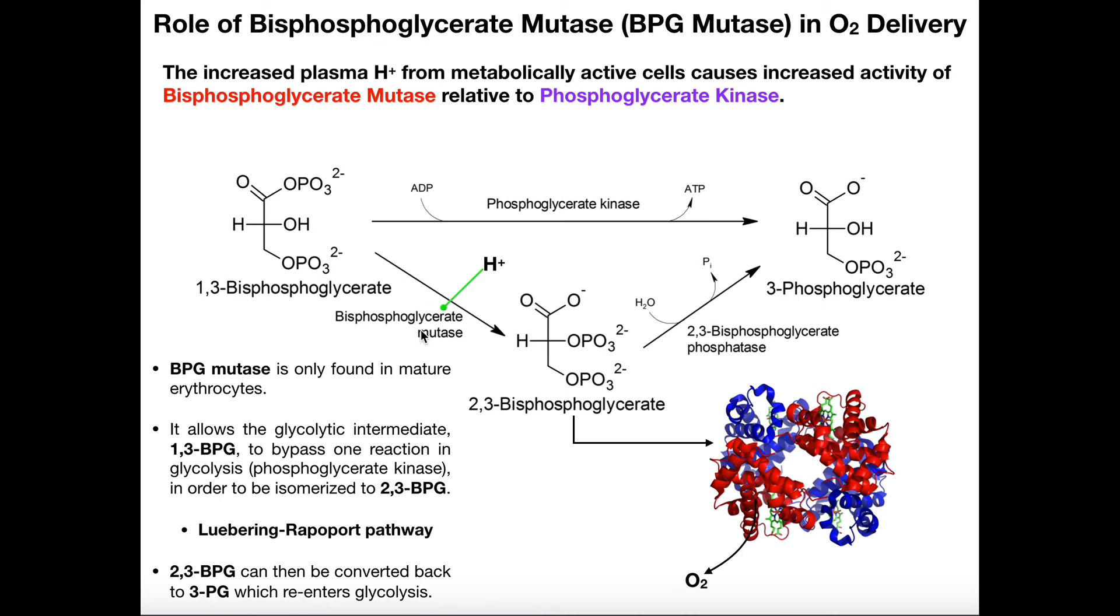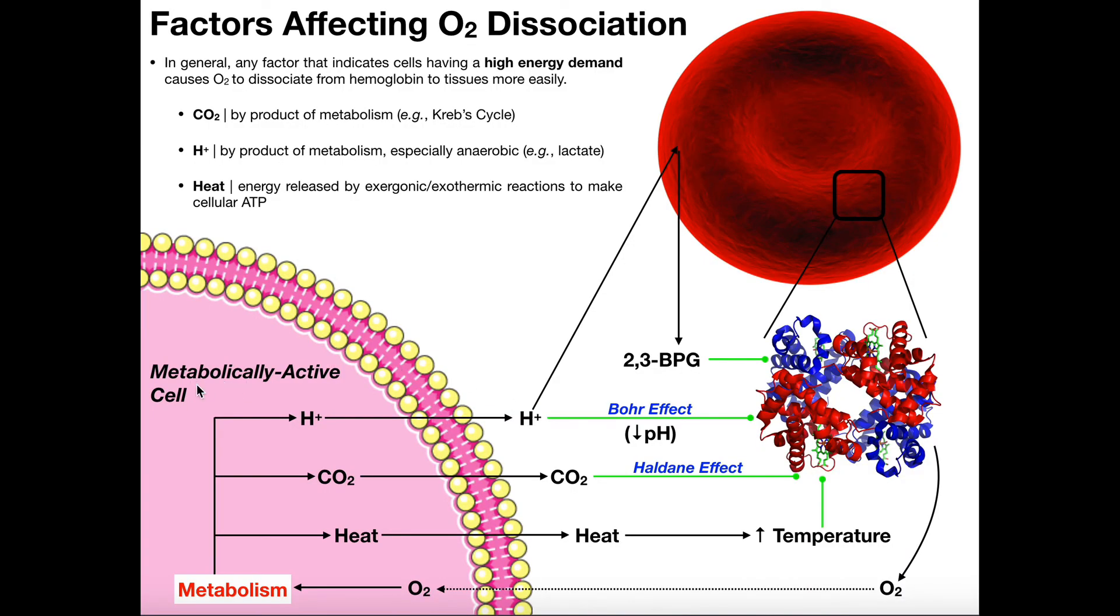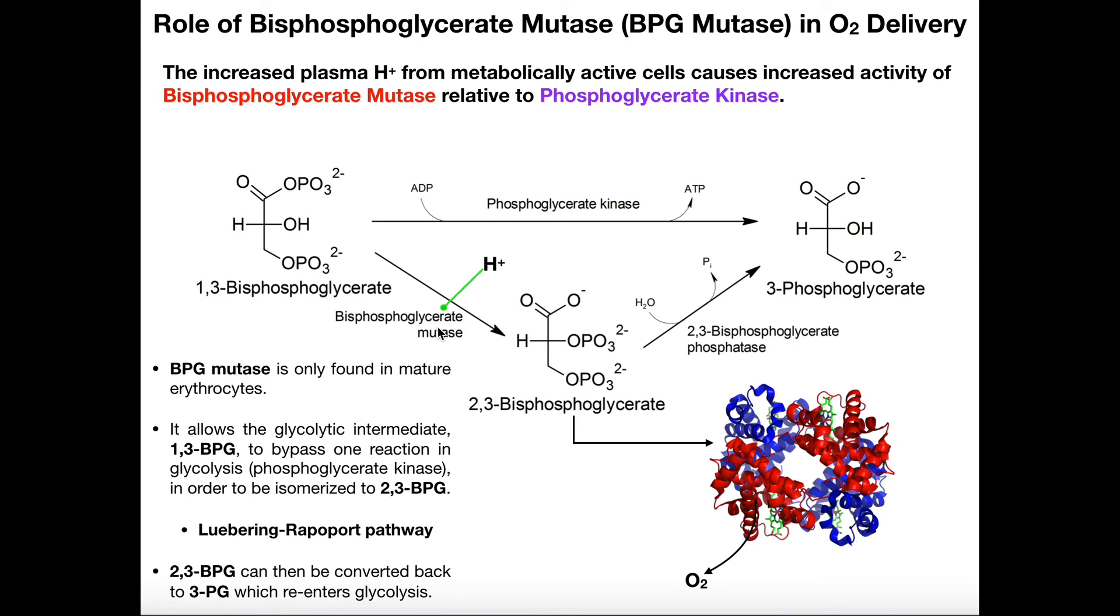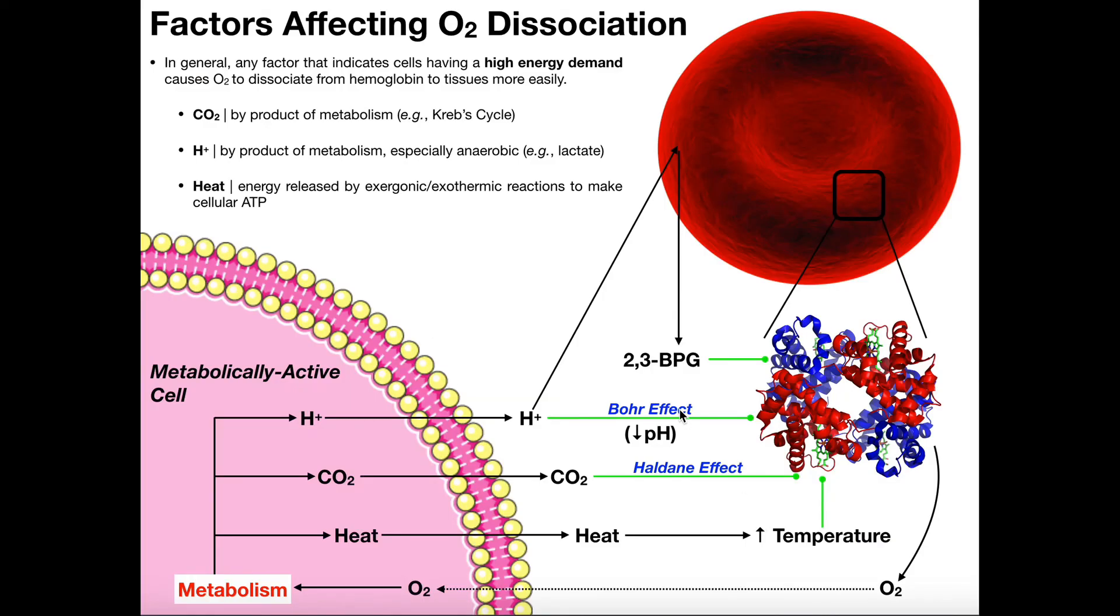It turns out that hydrogen ions actually increase the activity of bisphosphoglycerate mutase. That's interesting because hydrogen ions are produced by metabolically active cells. And so if these hydrogen ions enter the red blood cell and increase the activity of bisphosphoglycerate mutase, then we're going to get more 2,3-BPG. So that's a key. The more hydrogen ions released by metabolically active cells, the more 2,3-BPG that we generate. And then the more 2,3-BPG can induce oxygen dissociation. So this is another way by which metabolically active cells can signal to the red blood cells, hey, we need more oxygen. They just release their hydrogen ions. And in an alternate mechanism to the Bohr effect, they trigger the red blood cell to generate more 2,3-BPG, which then again causes more oxygen dissociation. So this is kind of a cool thing.